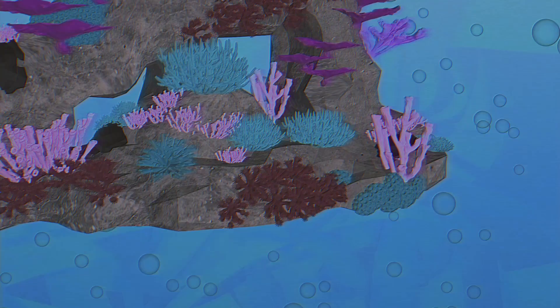The coral polyp can be as small as a poppy seed or as big as a grapefruit. And these little guys are the construction workers of the coral reef.